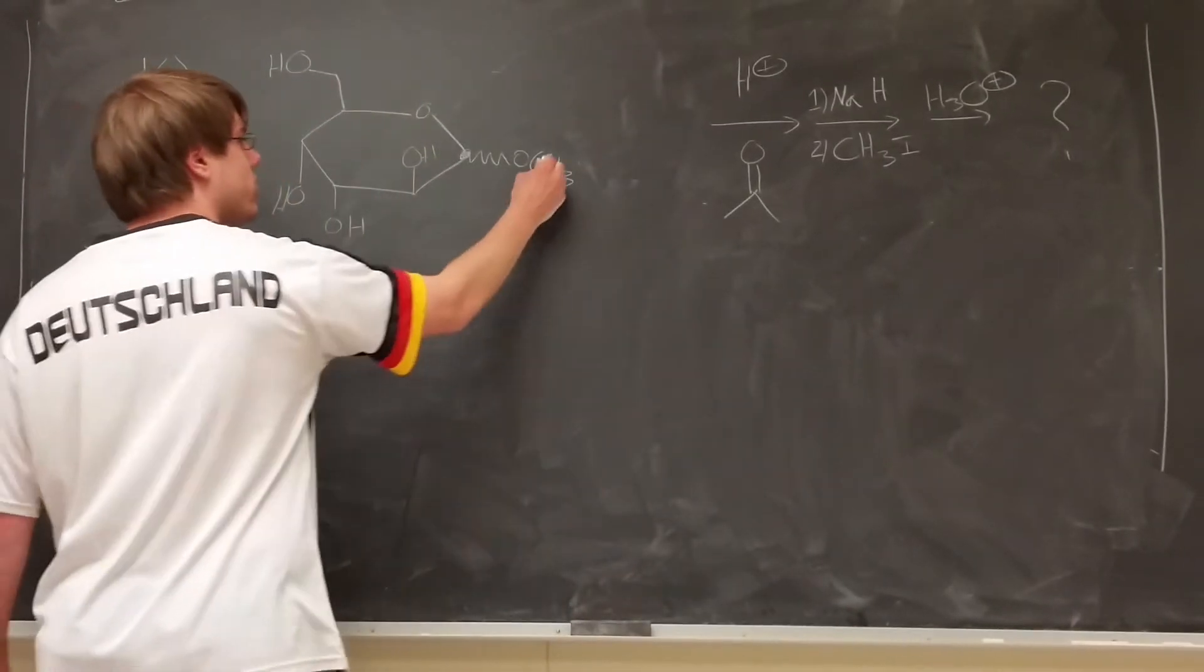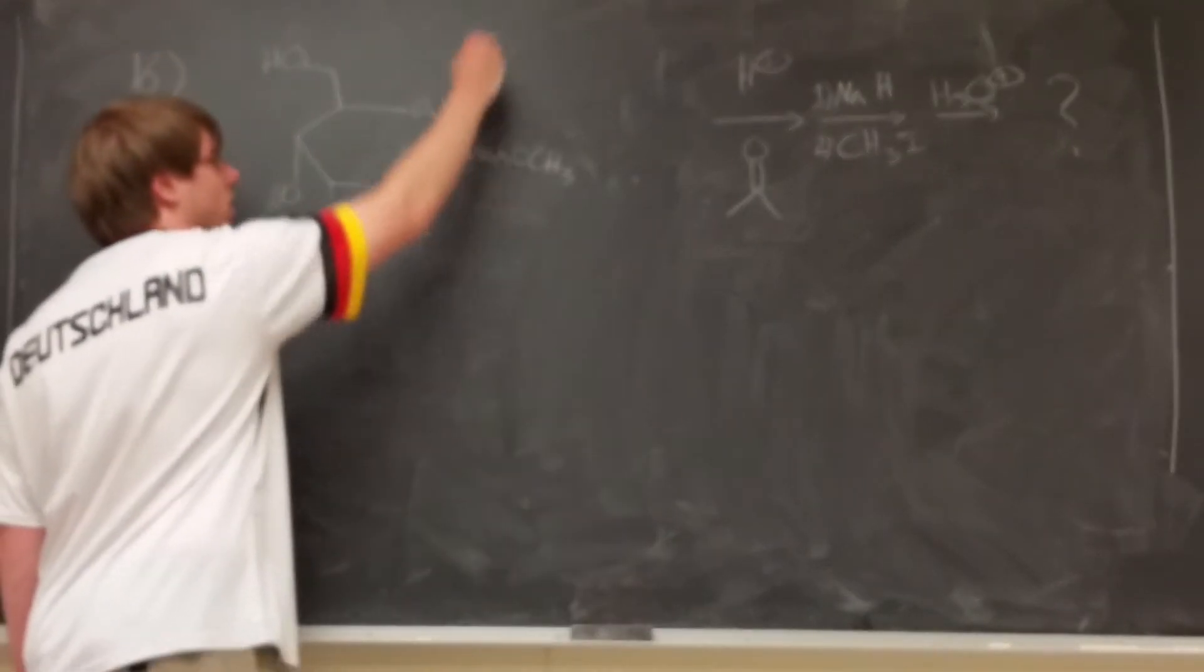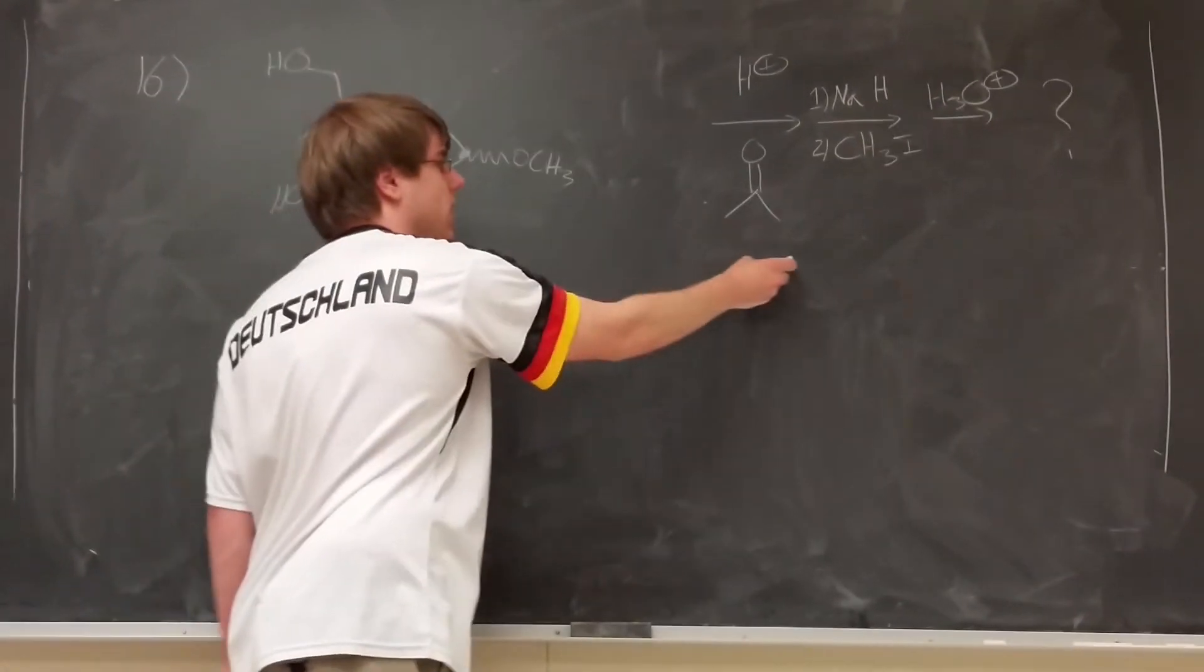Now notice that from the start, they gave you a squiggly line to that OH. That means the oxygen was either pointing up or pointing down. And the reason why we wanted to do this is because of the next step.